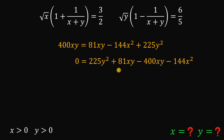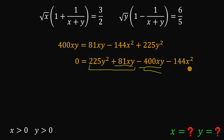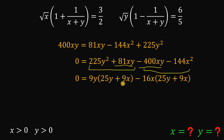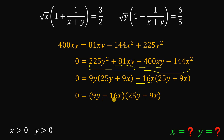We rearrange the terms and set the expression equal to 0. Don't combine 81xy and 400xy yet. Notice that 225 and 81xy share a common factor of 9y, so we factor out 9y from those terms. And 400 and 144 share a common factor of 16, so we factor out 16x. This gives us 9y times (25y plus 9x) minus 16x times (25y plus 9x), and we see the common factor (25y plus 9x), yielding (9y minus 16x)(25y plus 9x) equals 0.